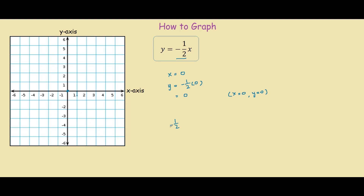If the slope was positive half, we would go up half. So since we go down negative half, we go across one, then negative half, across one, negative half, and so on.